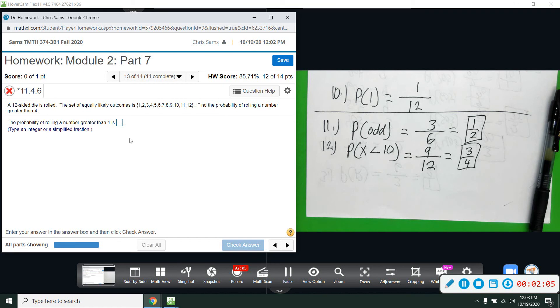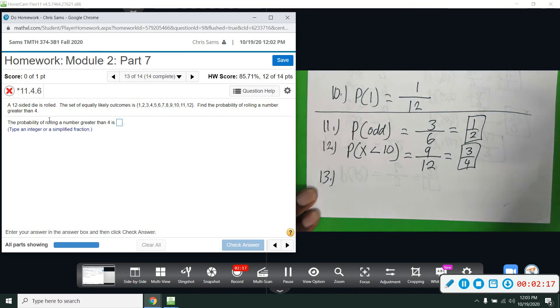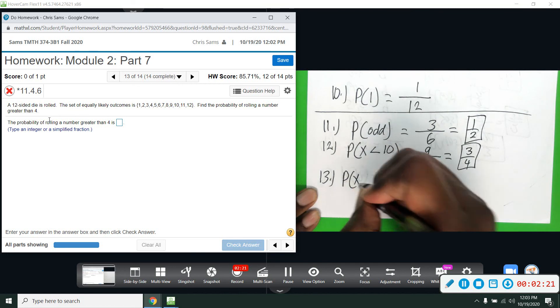And 13, we'll do that one here as well. We've got a 12-sided die, equally likely outcomes. We want to find the probability of rolling greater than 4. So probability—I'm going to say this random variable, some number greater than 4.